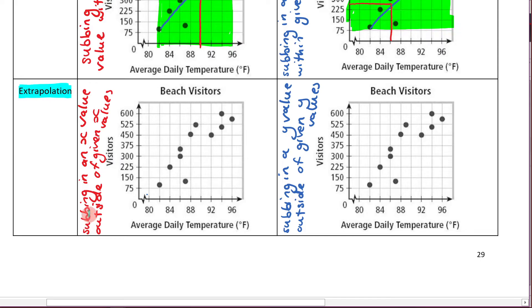So extrapolation. That's when we're subbing in an x value outside of the given x values. So that would be like here or here. This is less reliable and we're making predictions around there. So too, when we're subbing in a y value outside of the y values. So like here or here, when we're making predictions like that.